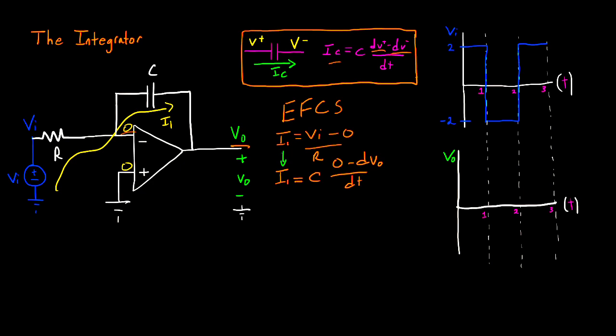Now what I can do is I can equate my two I1's together, and this is going to give us VI divided by R is equal to negative C DVO DT.